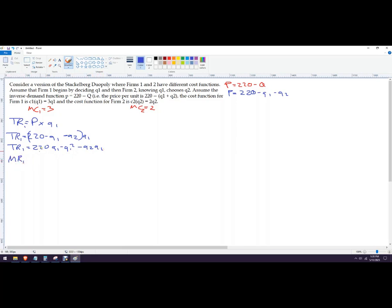Now, if I want marginal revenue for firm 1, just like I did over here, I'm going to take the partial derivative with respect to Q1, and it's 220 minus 2Q1 minus Q2. This is a marginal revenue function for firm 1, and then we're going to set that equal to marginal cost. So that's going to be 3 equals 220 minus 2Q1 minus Q2.